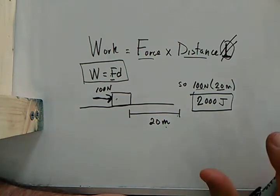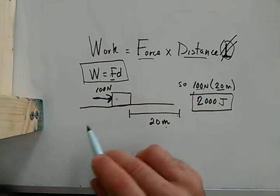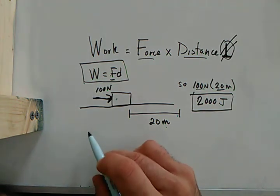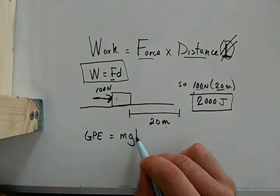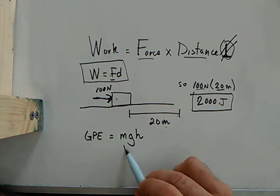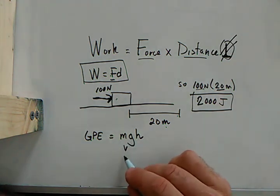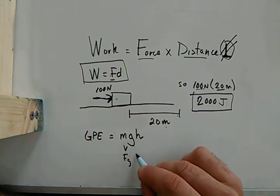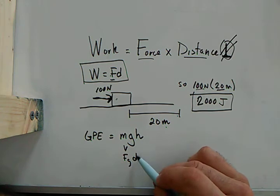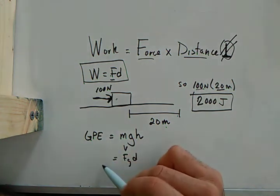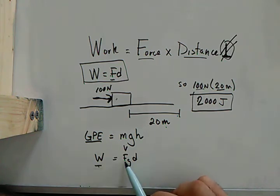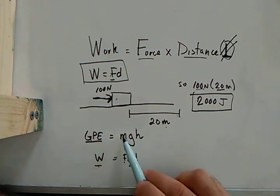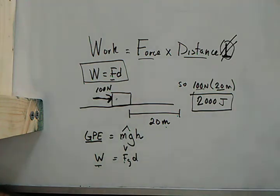And work is an energy unit. Now let's look quickly. You remember when we looked at gravitational potential energy, it's mass times gravity times height. Well, mass times gravity is the force of gravity. Height is a distance. We can actually relate gravitational potential energy to work. Work is force times distance. Gravitational potential energy is mass times gravity, which is force, times the height, which is a distance. And I just wanted to connect the dots for you.